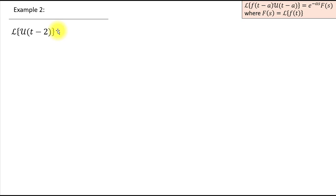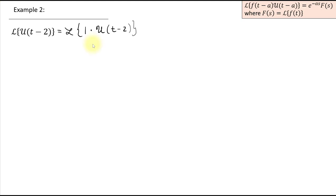Let's do another example. Knowing the Second Translation Theorem, we're able to find the Laplace transform of the unit step function. The theorem tells us how to find the Laplace transform of a product involving the unit step function and a translated function. Here we don't have that other function, but we can always introduce the constant function 1. So we write the Laplace transform of 1 times the unit step function at 2. For the theorem to work, the function must have the same amount of shift as the value in the unit step function.